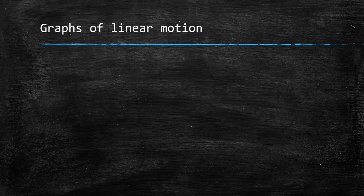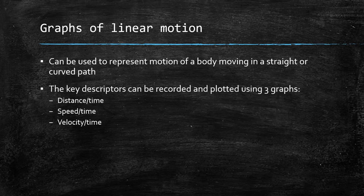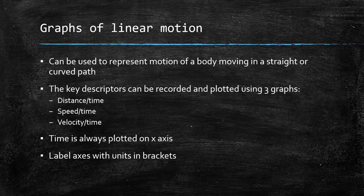Moving on to drawing graphs of linear motion using those key descriptors. These can be used to represent motion of a body moving in a straight or curved path. The key descriptors can be recorded and plotted using three different graph types: a distance over time graph, a speed over time graph, and a velocity over time graph. Time is always plotted on the x-axis, and you always need to label your axes with units in brackets. You can use a curved line of best fit to show the average motion.